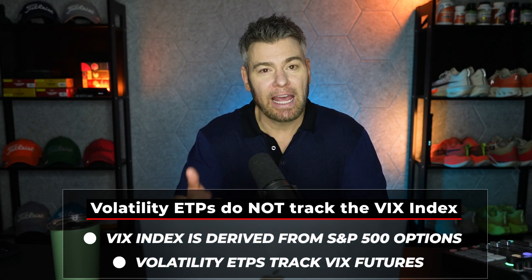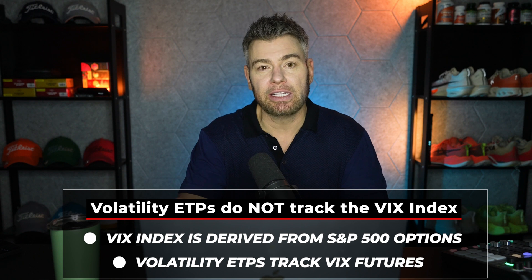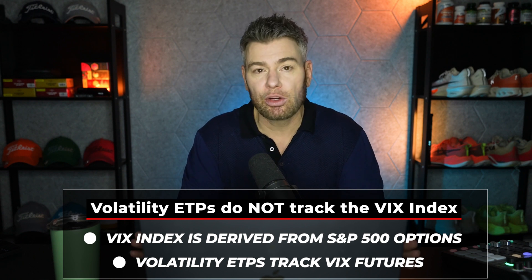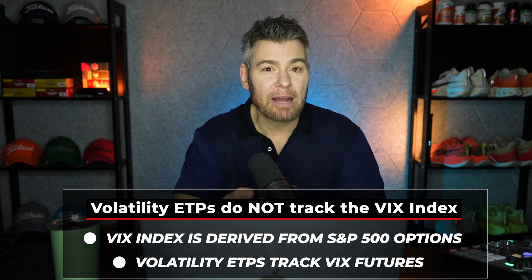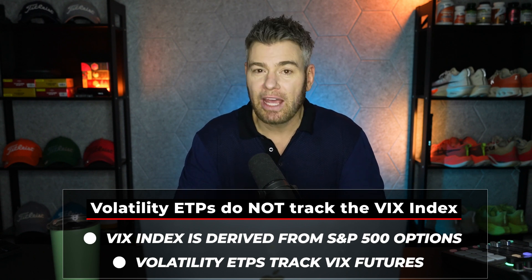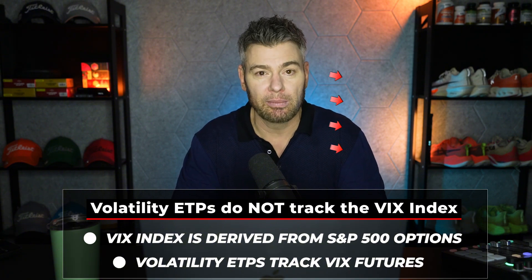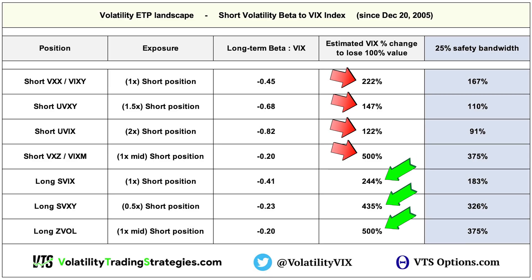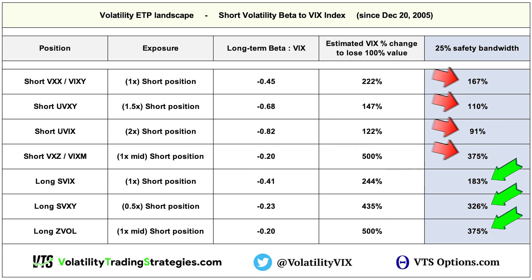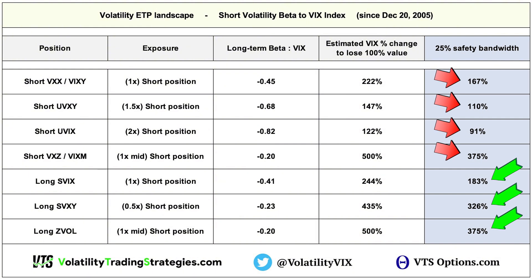So even though the VIX index and volatility ETPs are technically entirely separate securities, using the beta factor we can see the long-term relationship between them. If you're ever wondering how much the VIX index would have to spike to get your trade into trouble, come back to this video — this table will give you the estimations to keep you relatively safe. There is a range, be aware of that, but these are very good approximations.